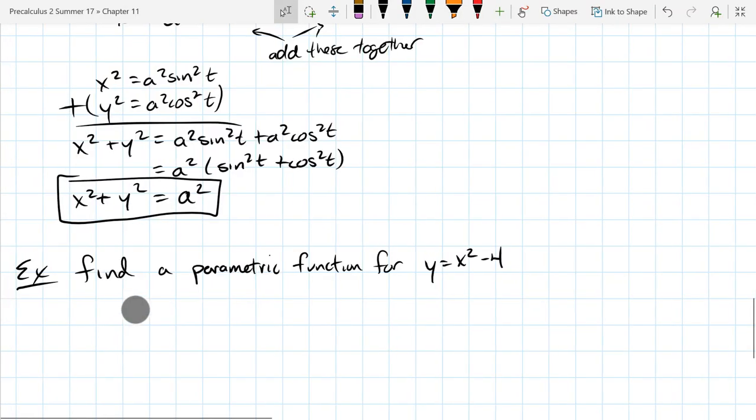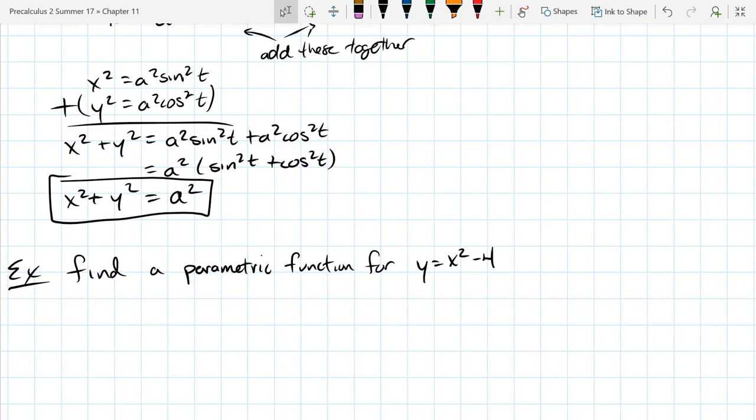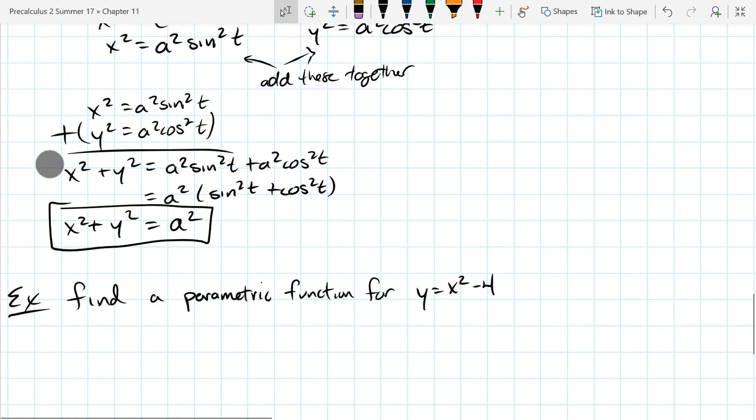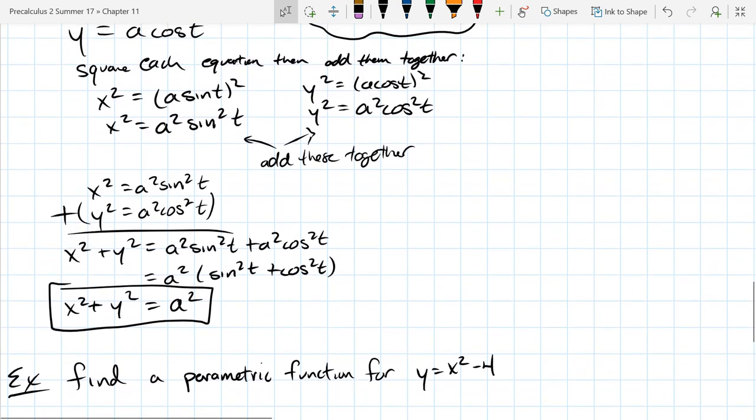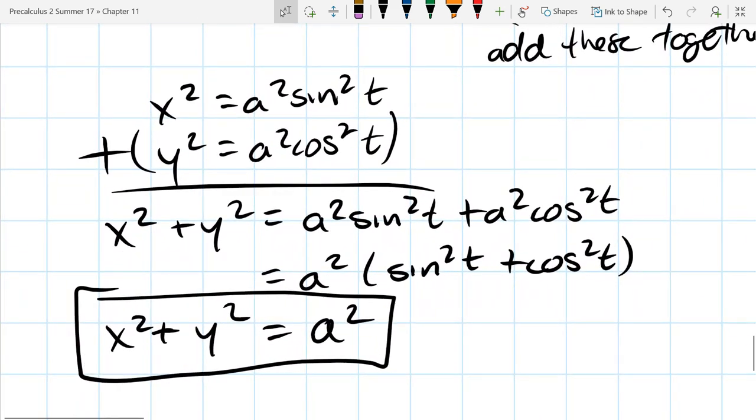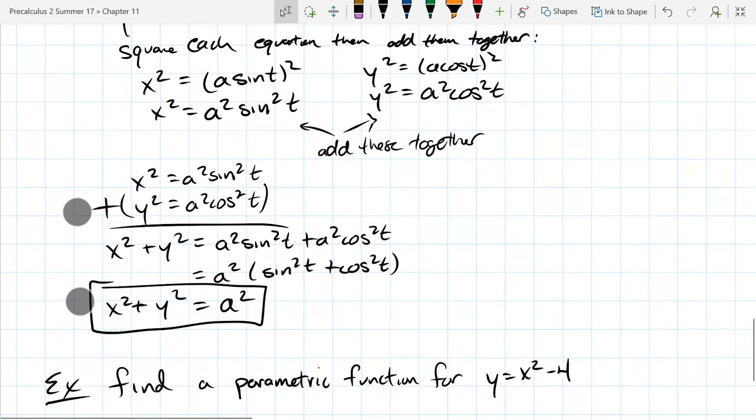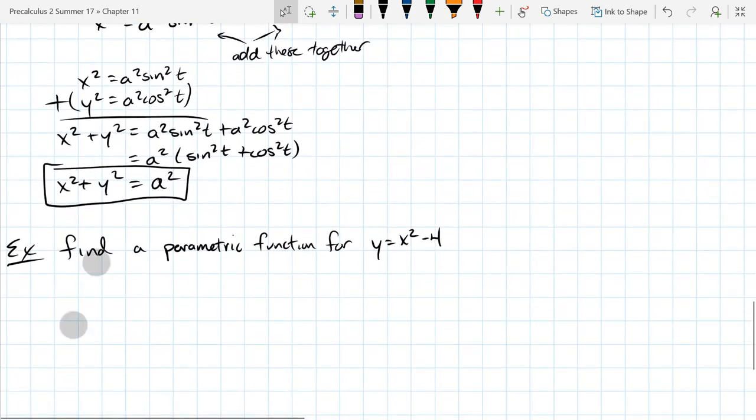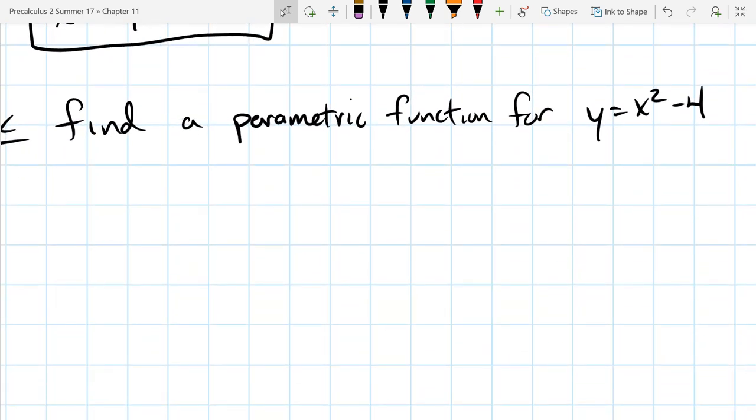The last type of problem we have is what I call a backwards problem or an inverse problem where we're going to start with a rectangular equation and I want to create a parametric equation or function that would have the same graph. So it's exactly the opposite order that the last problem did. Now we want to go the opposite direction, find a parametric function for this right here.